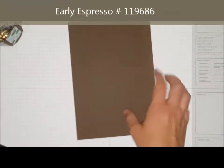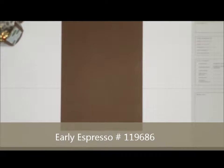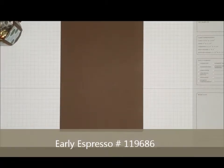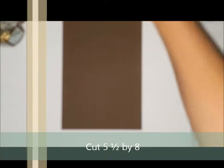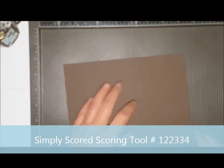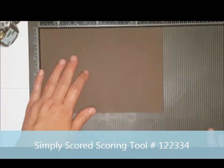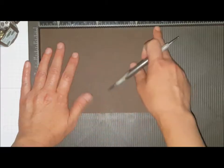I have a piece of Early Espresso cut at eight inches by five and a half, so you can get two out of one sheet of cardstock. I also have a piece of scrap for the handle. I'm going to bring over my Simply Scored scoring board.